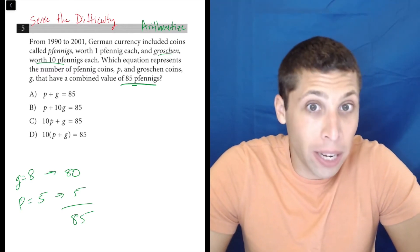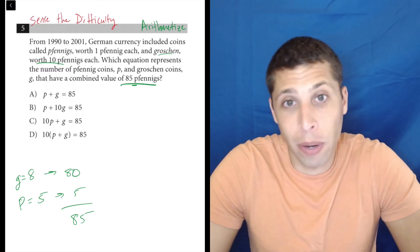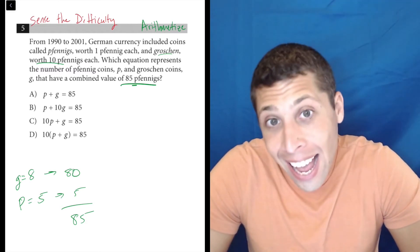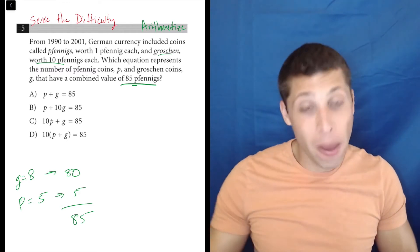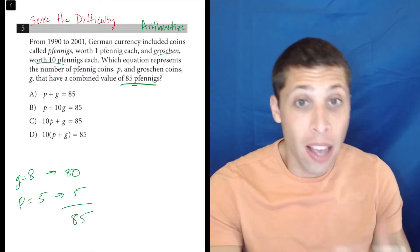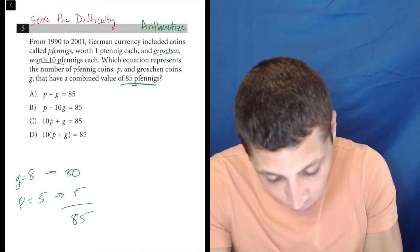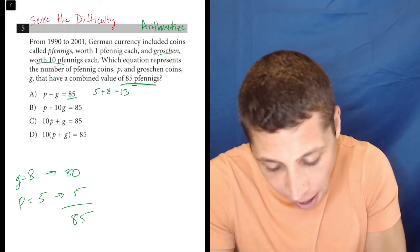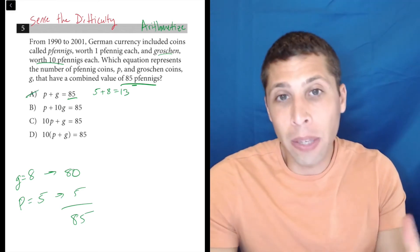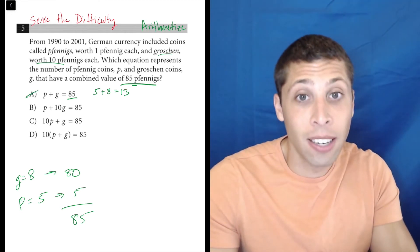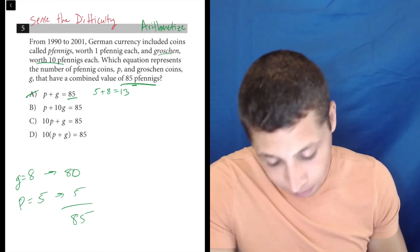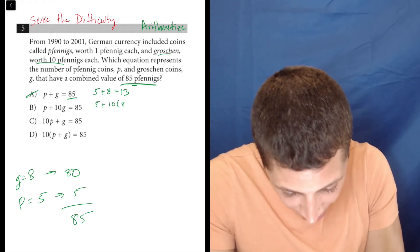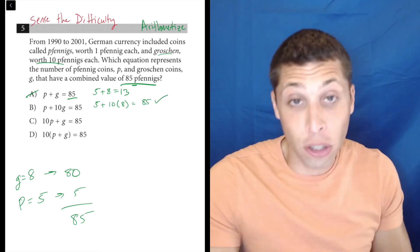So 8 Groshens is 80 Fennings plus another 5 would be 85. This is a situation that works. These numbers are not totally random, but there's a logic to it. I need to make sure I satisfy the requirements of the story. But now I can maybe understand the equations a bit better just by plugging those same numbers in. And they should work in the equation. So we can see right away with choice A, 5 plus 8 is 13, not 85. So that equation must be wrong because the situation that we concocted doesn't match with the equation. Whereas if we did 5 plus 10 times 8, that's 5 plus 80, that's 85, that looks good.